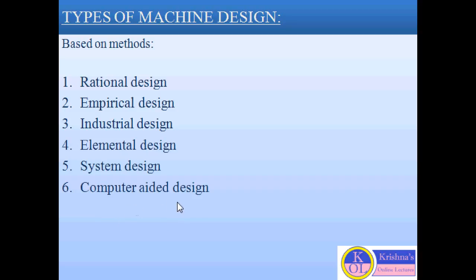The sixth type of design is computer-aided design. For construction, modification, implementation, and analysis, if these steps are performed with the help of a computer system, this type of design is considered computer-aided design. An example of computer-aided design is CNC. These are the types of machine design.